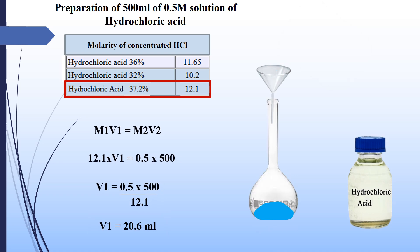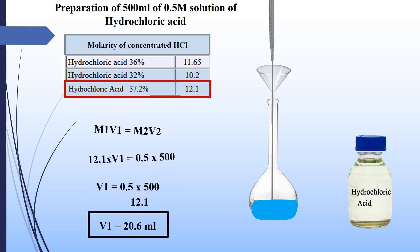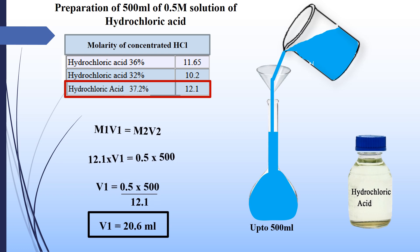To prepare 500 milliliters of 0.5 molar solution of hydrochloric acid: M1 will be the same as in the previous calculations. V1 is to be found out. M2 will be 0.5, as we want to prepare a 0.5 molar solution. Put 500 in V2, as we want to prepare 500 milliliters of solution. Take 20.6 milliliters of concentrated hydrochloric acid with a pipette into a 500 milliliter flask having a little water in it, and dilute the solution up to the mark. This will be 500 milliliters of 0.5 molar solution of hydrochloric acid.